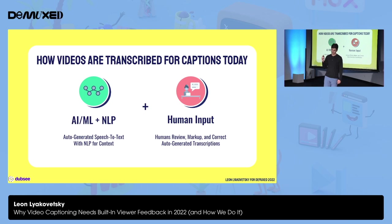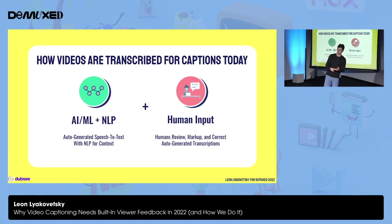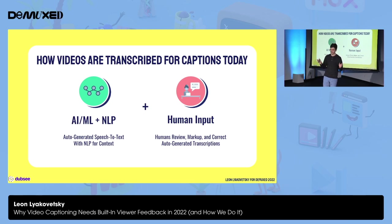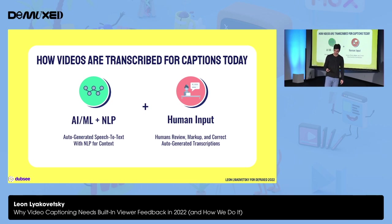Accurate captioning ultimately relies on humans and not machines alone. Today, captions are typically fed into auto-generating programs that use artificial intelligence and machine learning with natural language processing to convert speech into text, which is then time-stamped and synced with the original audio to create captions. These auto-transcriptions are very impressive technically, but they still need to go through a process of human input and review in order to meet any captioning standard.